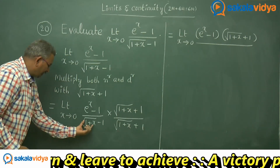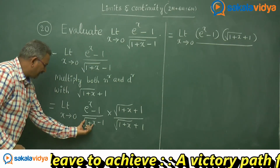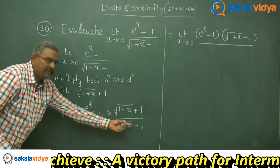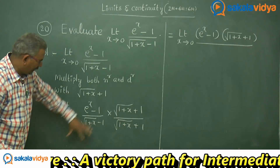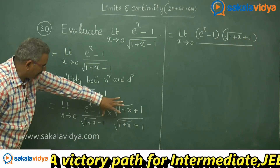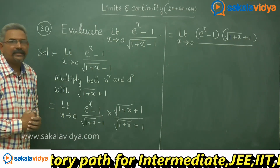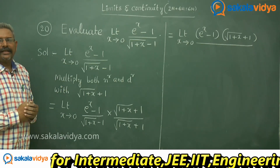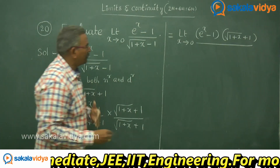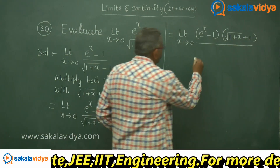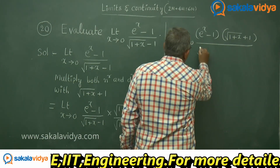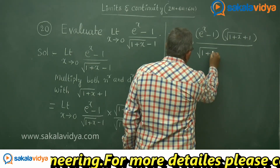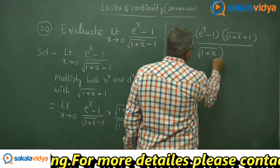Observe: if we say root of 1 plus x is 'a' and 1 is 'b', then a minus b into a plus b equals a squared minus b squared. So the denominator becomes root of 1 plus x squared minus 1 squared, which simplifies to 1 plus x minus 1, giving us just x.